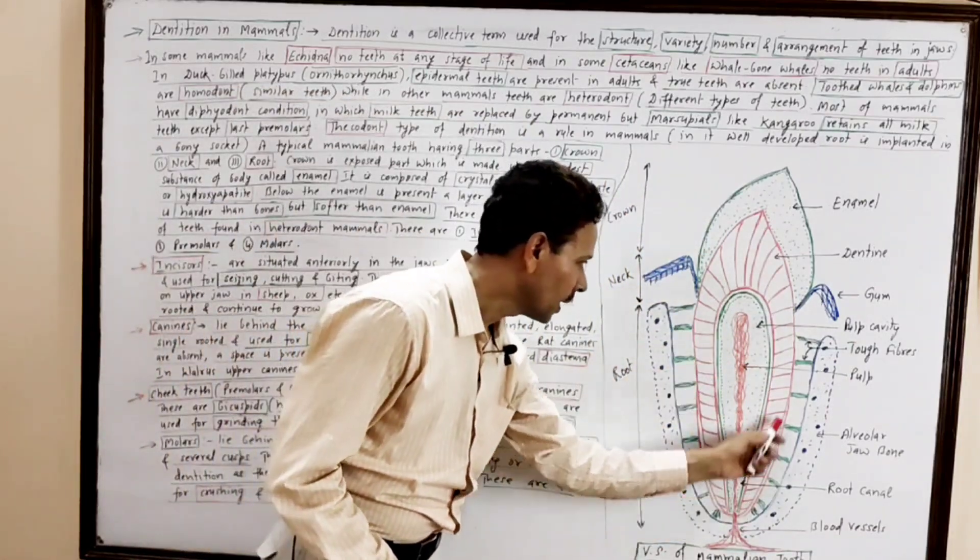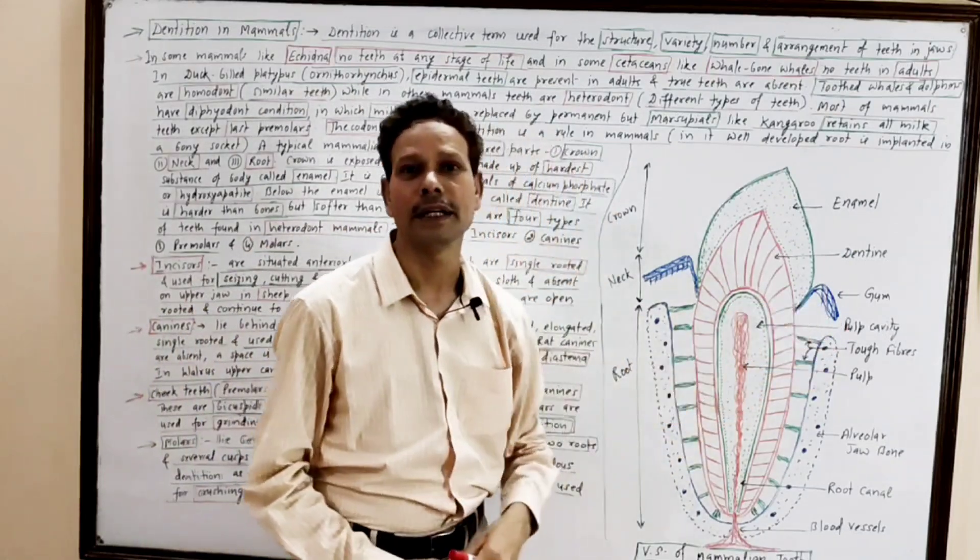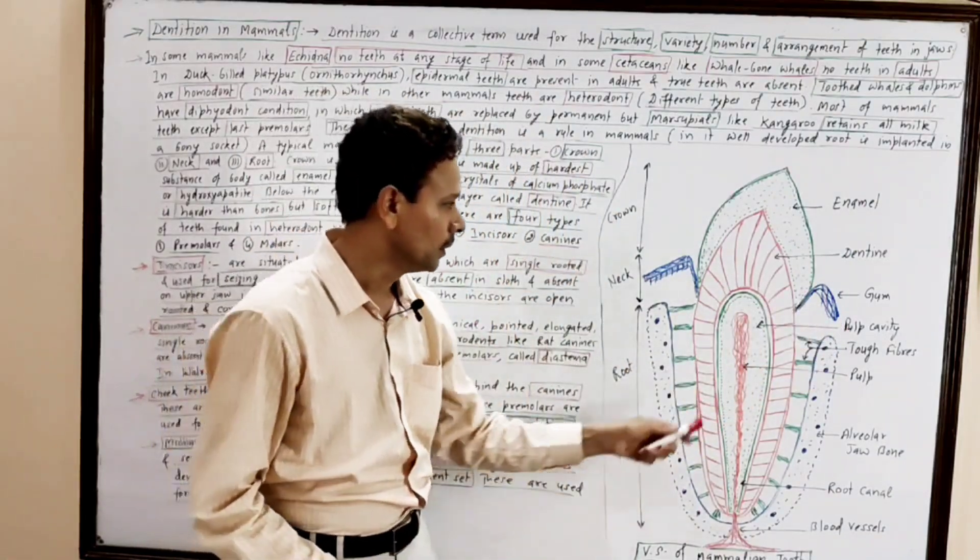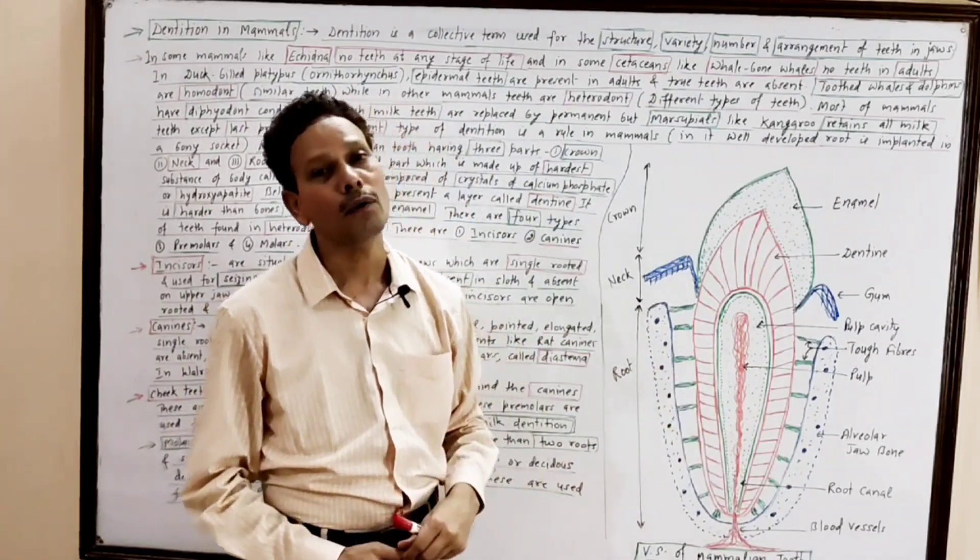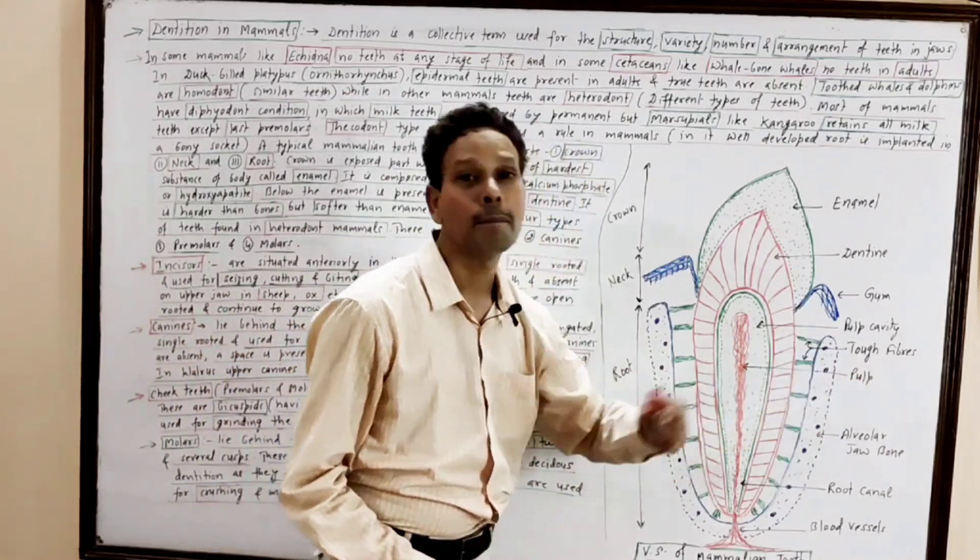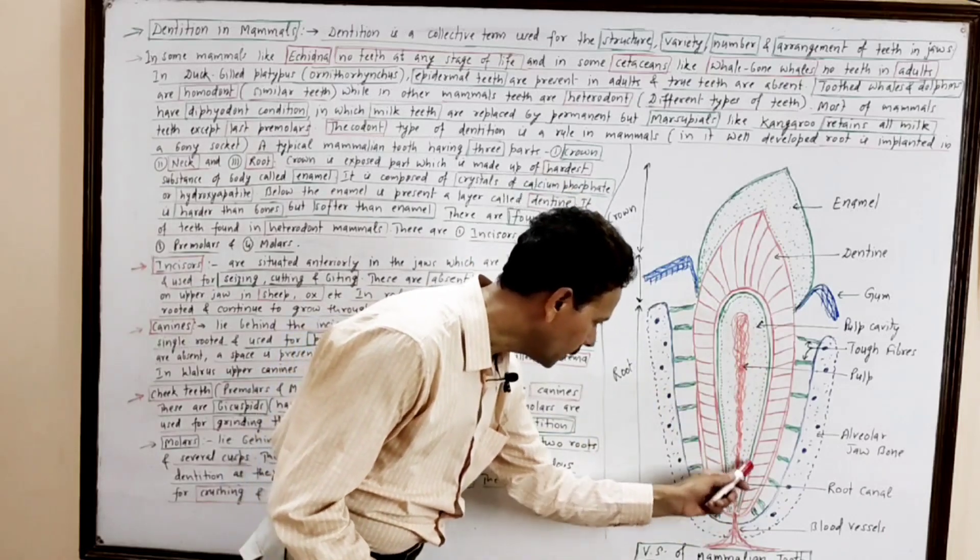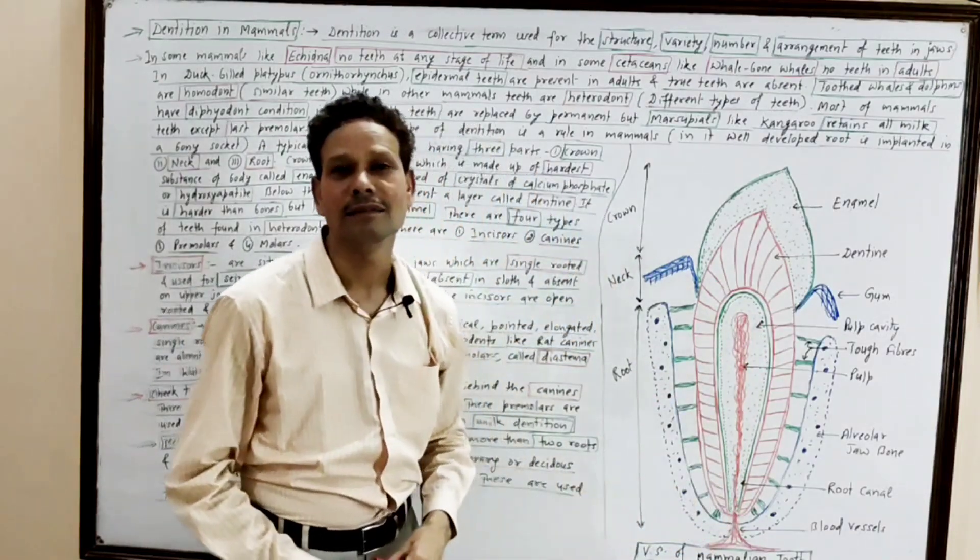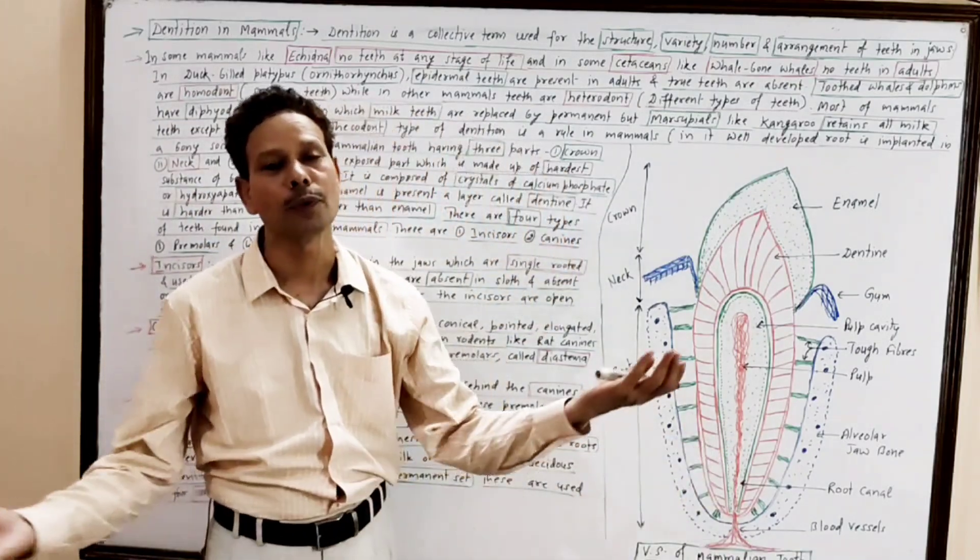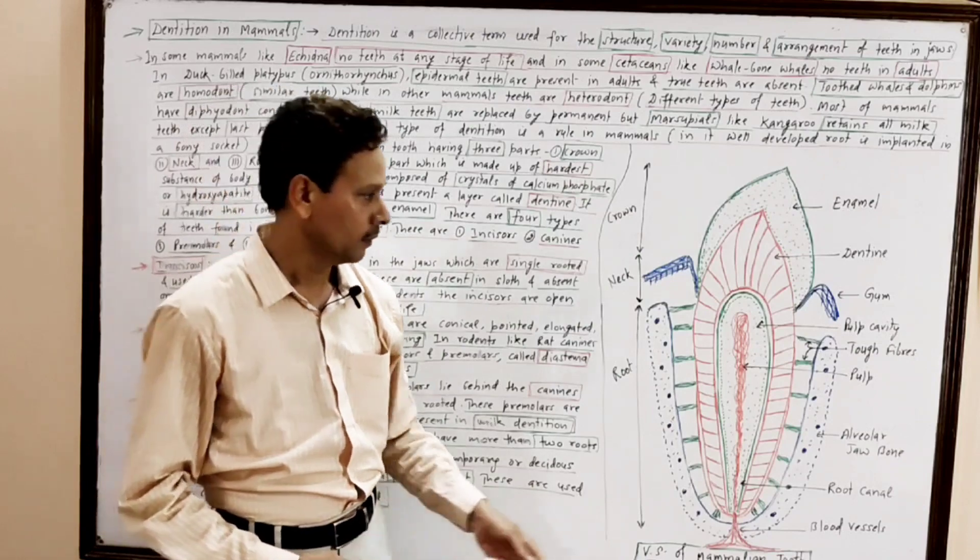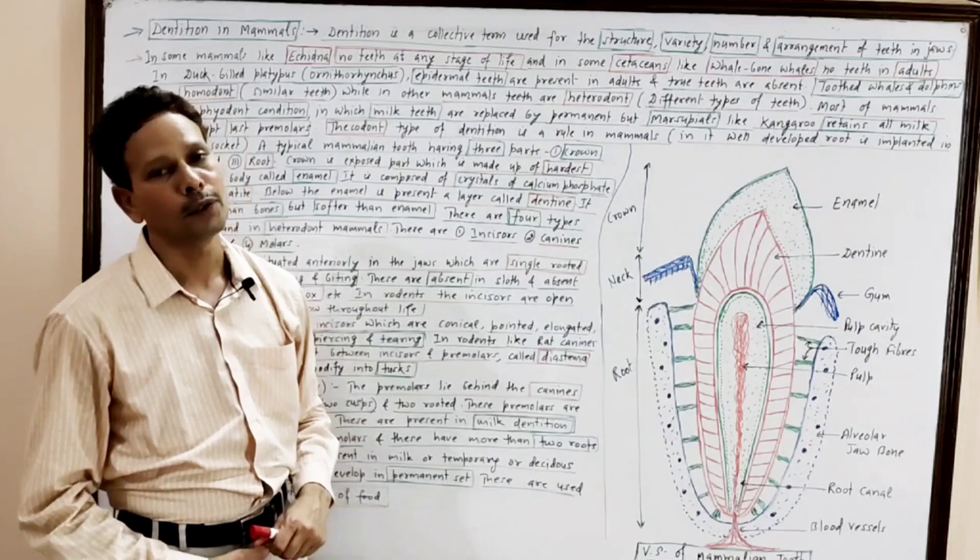A tooth encloses a cavity. This is pulp cavity. In this pulp cavity, blood vessels, connective tissue, and nerve collectively constitute a pulp. In this basal part, the pulp cavity opens by a pulp canal. Through that pulp canal, blood vessel, connective tissue, and nerve supply enter in a tooth.